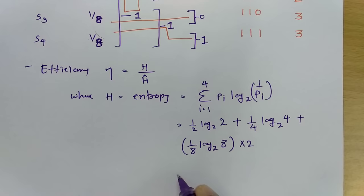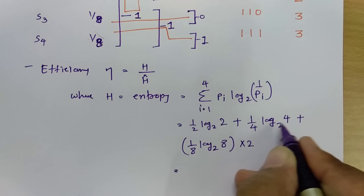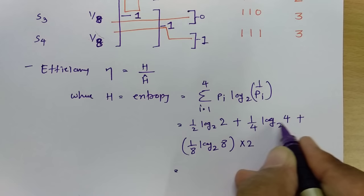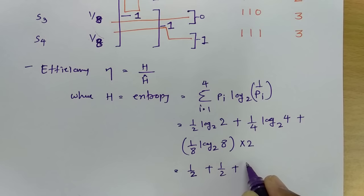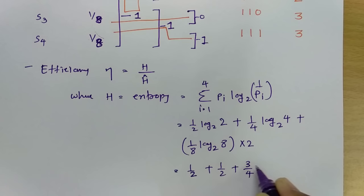Calculating the entropy: 1/2 + 1/2 + 6/8 = 1/2 + 1/2 + 3/4, which results in H = 1.75 bits per symbol.